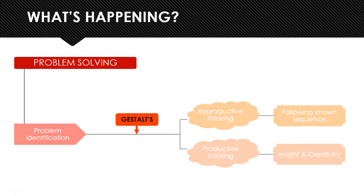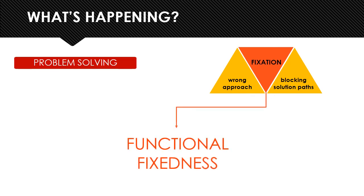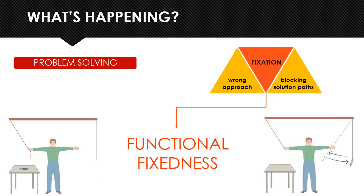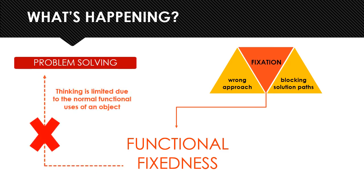According to Gestalt, the principle at play here is the principle of fixation, which means having a wrong approach to a problem solution due to past experiences, which ends up blocking our solution paths and restricting our thinking entirely. This phenomenon is known as functional fixedness. It is functional fixedness that creates a barrier between the problem and the solution in this experiment, simply because it does not initially occur to the participant to use the pliers in an unconventional manner. Functional fixedness creates an obstacle to problem solving because thinking is limited by the normal functional uses of objects we are aware of.